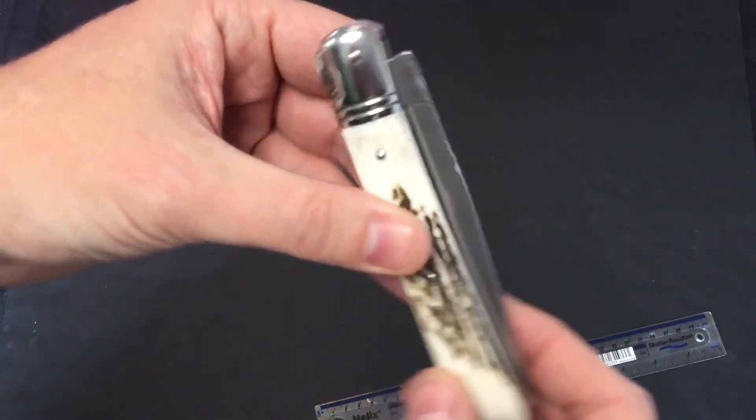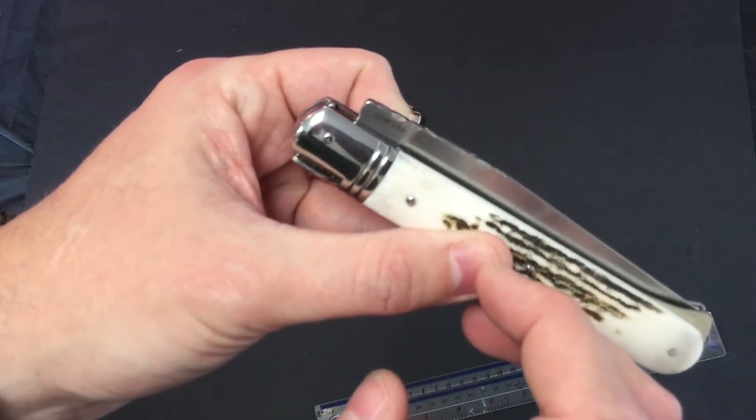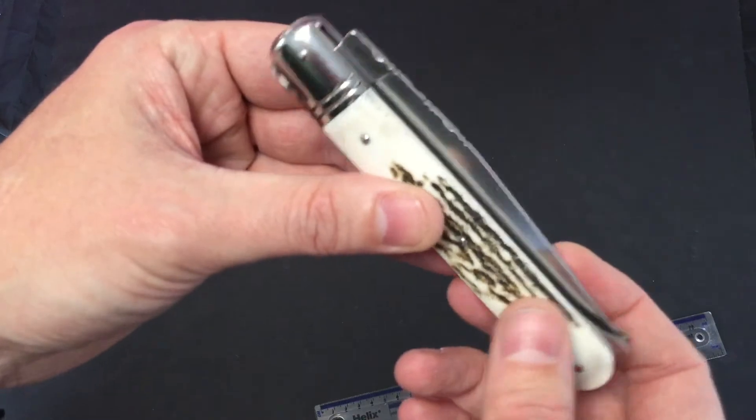Same on the stag one. File work back and on the blade. 154, there we go, just in focus. CPM steel.